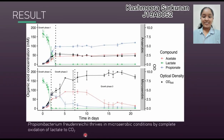The overall idea of this experiment is whether these bacteria thrive in micro-aerobic conditions. Here we see two different conditions: anaerobic and micro-aerobic. The graph shows concentration of organic acids over time. Green represents lactate, red represents acetate, and blue represents propionate. In growth phase one, the concentration of lactate is slowly depleted in both conditions, confirming that a lactate consumption phase is taking place.